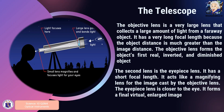How does a telescope work? The telescope has two basic parts: the objective and the eyepiece. The objective is much larger than the eyepiece and collects a large amount of light from faraway objects. It has a very long focal length because the object distance is much greater than the image distance. The images produced by the objective are real, inverted, and diminished. These images are then passed to the eyepiece, which has a short focal length and acts like a magnifying lens, forming a final virtual and enlarged image.